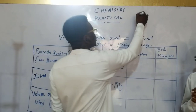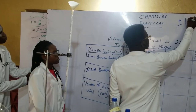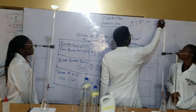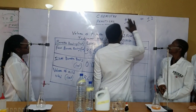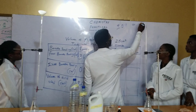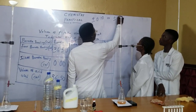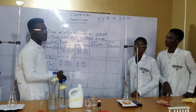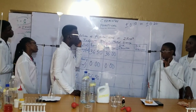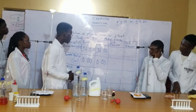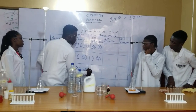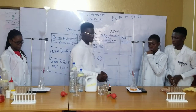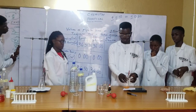Any error you're having must not be more than plus or minus 0.10 or 0.20. Whatever error you have in the difference, the gap here is almost like 0.5. What we have here is 36.00. So let's go for the next titration.